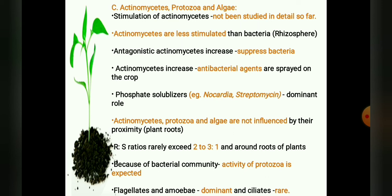As a rule, actinomycetes, protozoa, and algae are not significantly influenced by their proximity to plant roots, and their RS ratio rarely exceeds 2 to 3:1. However, around the root of the plant, the RS ratio for these organisms may go higher. Because of the large bacterial community, an increase in the number or activity of protozoa is expected in the rhizosphere. Flagellates and amoeba are dominant, and ciliates are rare in the region.